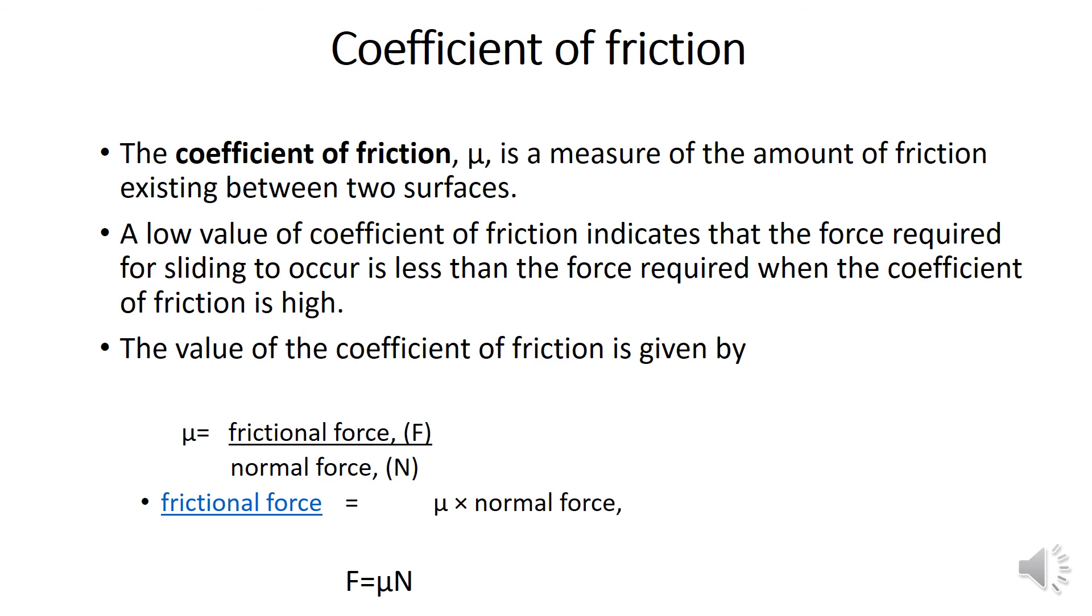The coefficient of friction is divided by a Greek letter mu. And it is a measure of the amount of friction existing between two surfaces. A low value of coefficient of friction indicates that the force required for sliding to occur is less than the force required when a coefficient of friction is high.